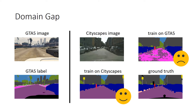More recently, photorealistic datasets such as GTA V rendered from simulators with precise annotations have been utilized to train segmentation networks. However, models trained from synthetic data are hardly transferable to real data due to the cross-domain gap.